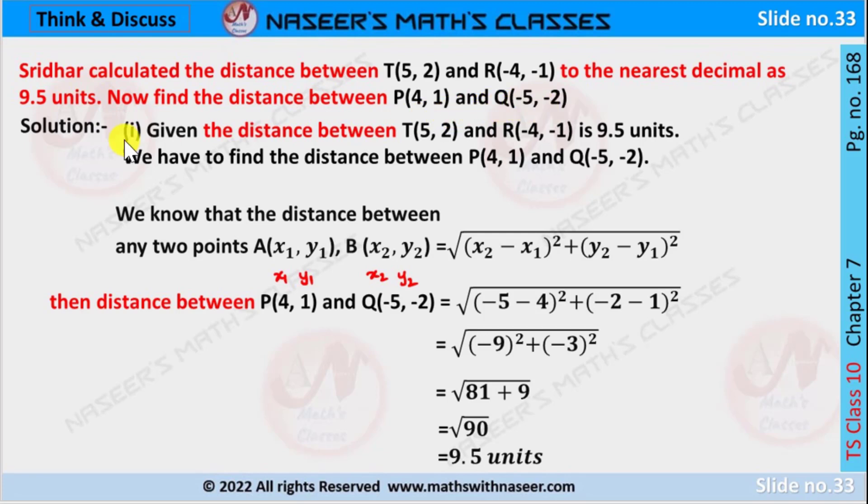So given points are T(5, 2) and R(-4, -1). The distance is calculated by Sridhar, that is 9.5 units. Now we have to find the distance between P(4, 1) and Q(-5, -2).